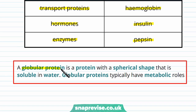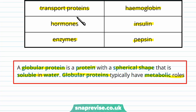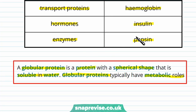So a globular protein is a protein with a spherical shape which is soluble in water. Globular proteins typically have metabolic roles, and all of the examples we'll go through dissolve in water — for example in the cell or in the blood plasma — and they all have a role related to that.